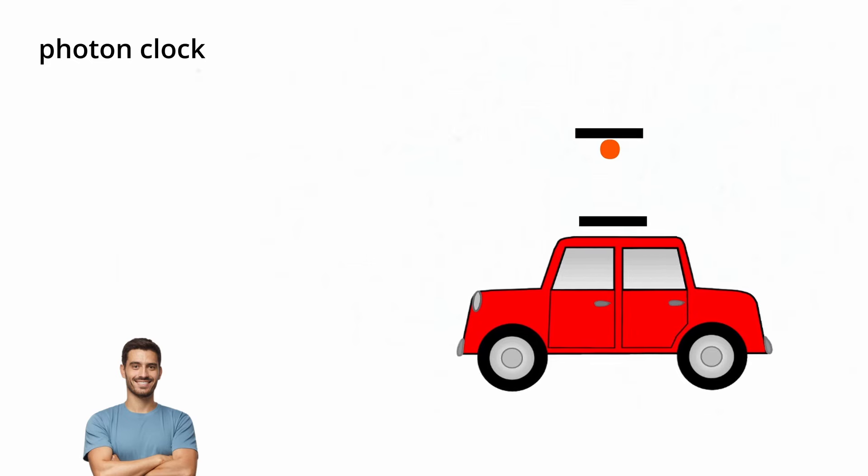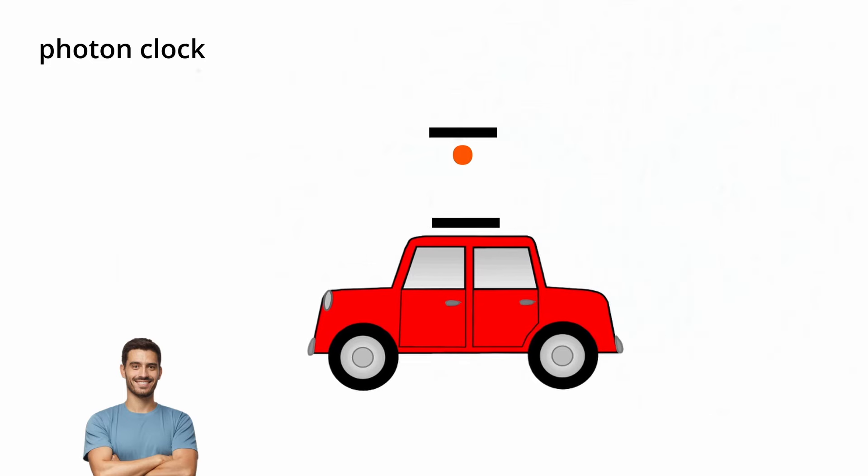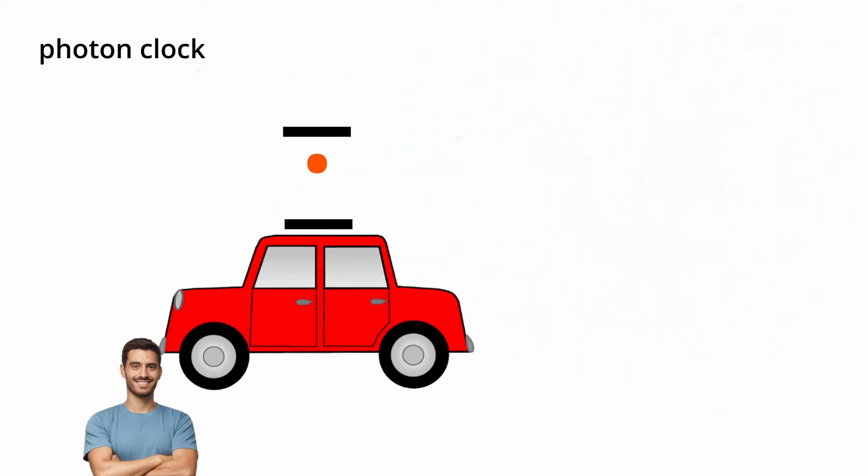But when the car begins to move, Einstein says that from the observer's point of view, the photon will begin to take a longer path in comparison to when it's just moving up and down. You don't believe me? Let's watch that one more time.